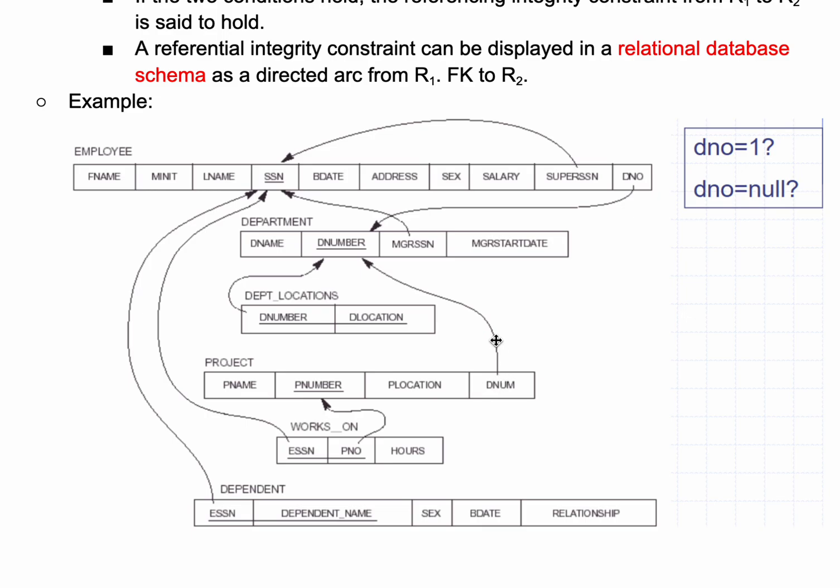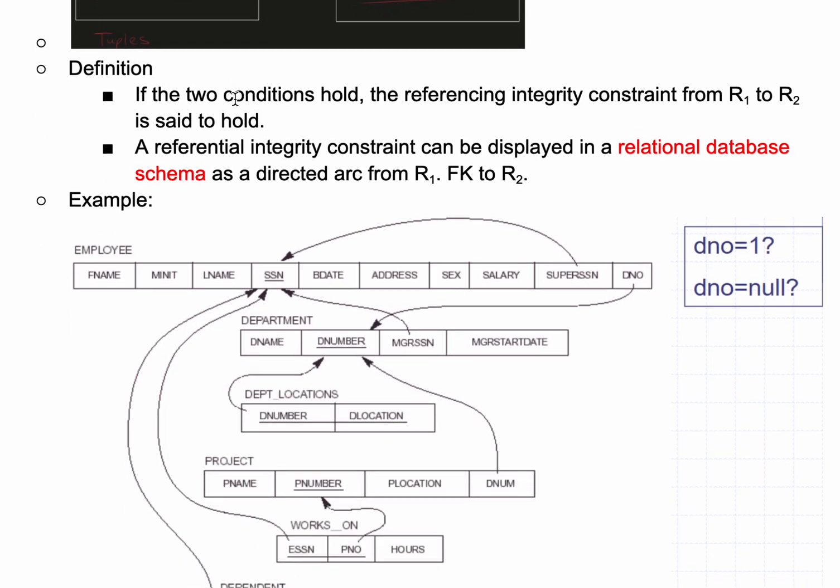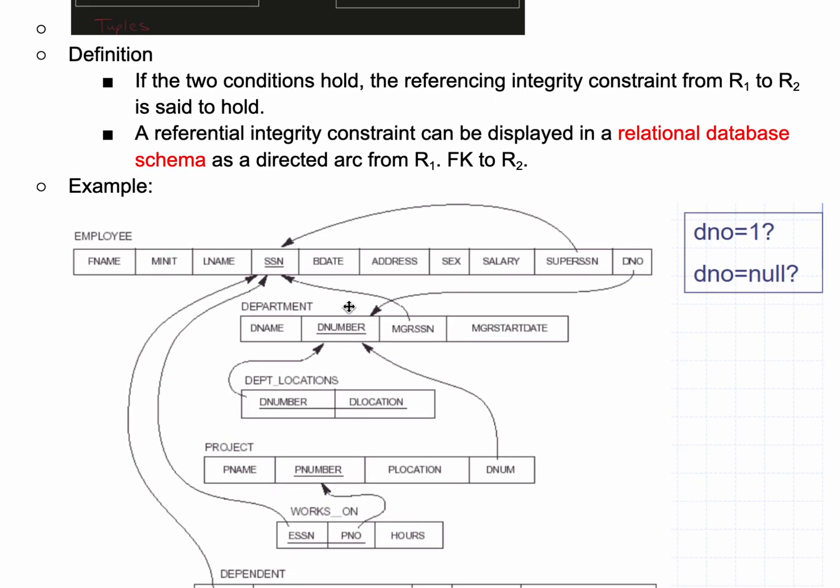This is our foreign key. This is the one that we are referencing and we are referring to our DNUMBER, which is a primary key because we have this underline here.